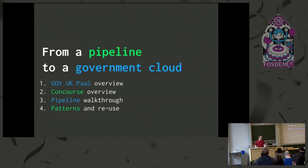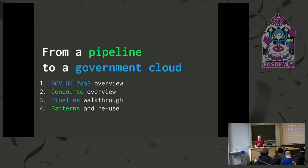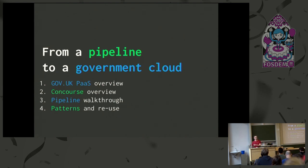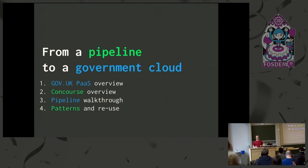This talk is split into four parts. I'm going to give you an overview of the platform as a service that we run, then an overview of Concourse the tool, then we'll go through a simple Concourse pipeline — how to write one and how to make it better — and then we'll go through the GOV.UK PaaS Concourse pipeline we use to deploy our platform, and talk about some of the patterns in that pipeline.